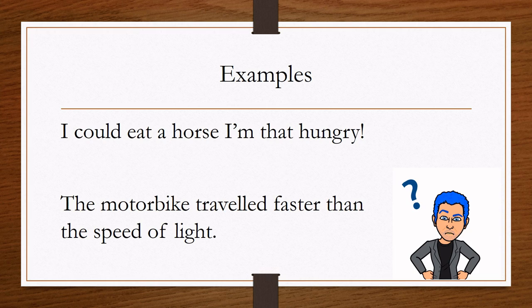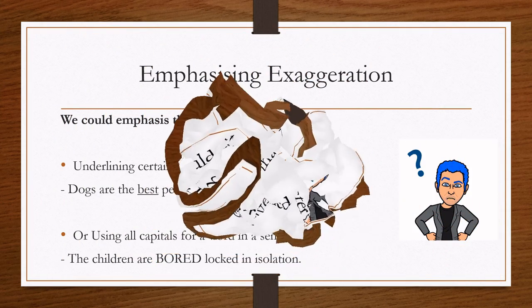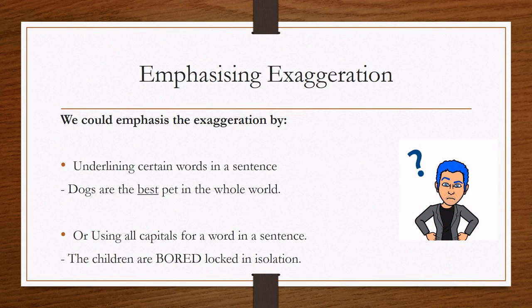When you're writing with exaggeration, there are other ways you can do it — you can be emphasizing the exaggeration. We could emphasize it by underlining certain words in a sentence: 'Dogs are the best pet in the whole world.' You can see that 'best' has been underlined to draw the reader's attention to it.